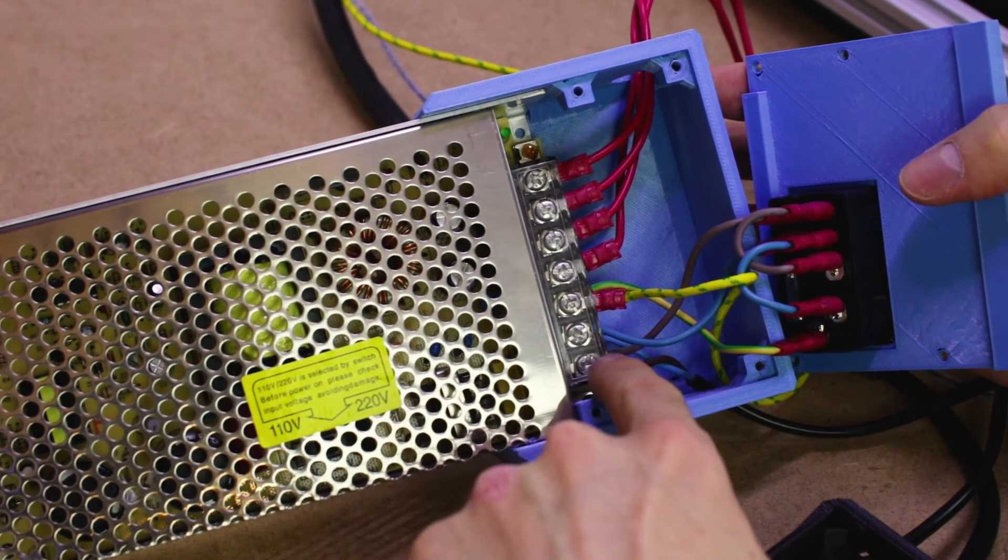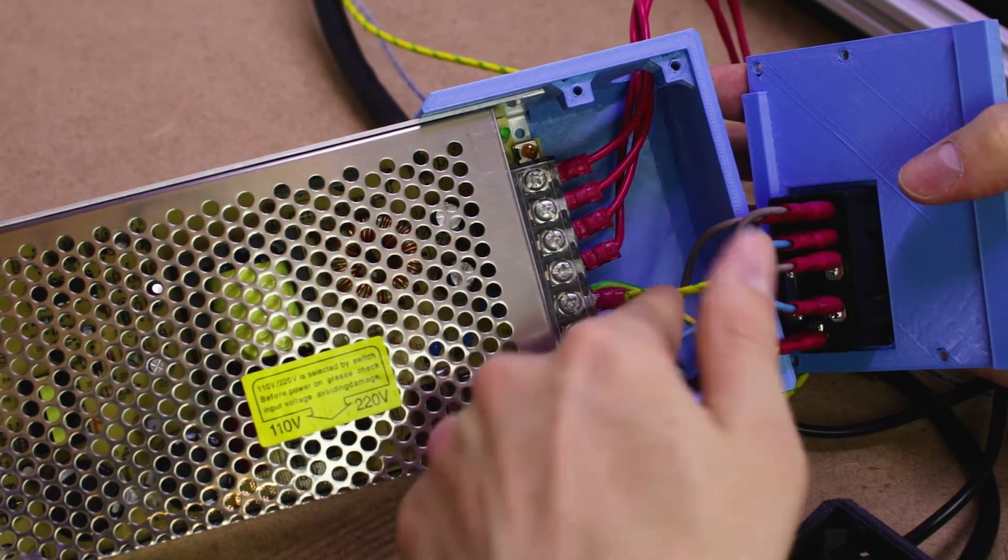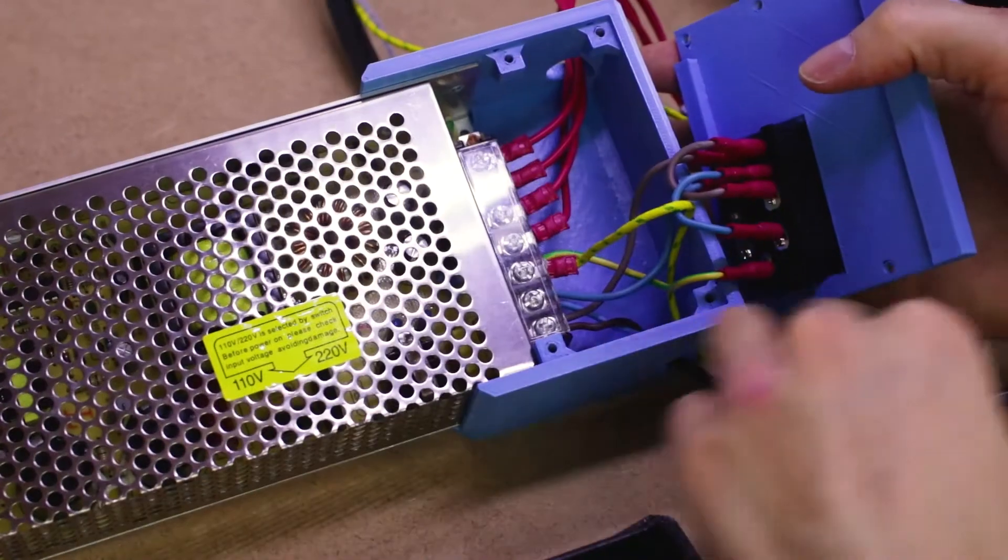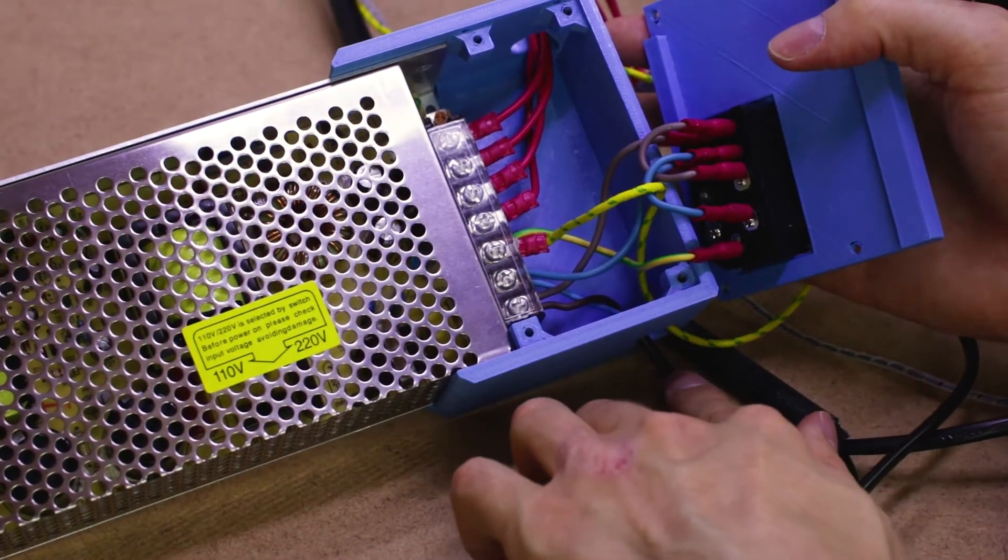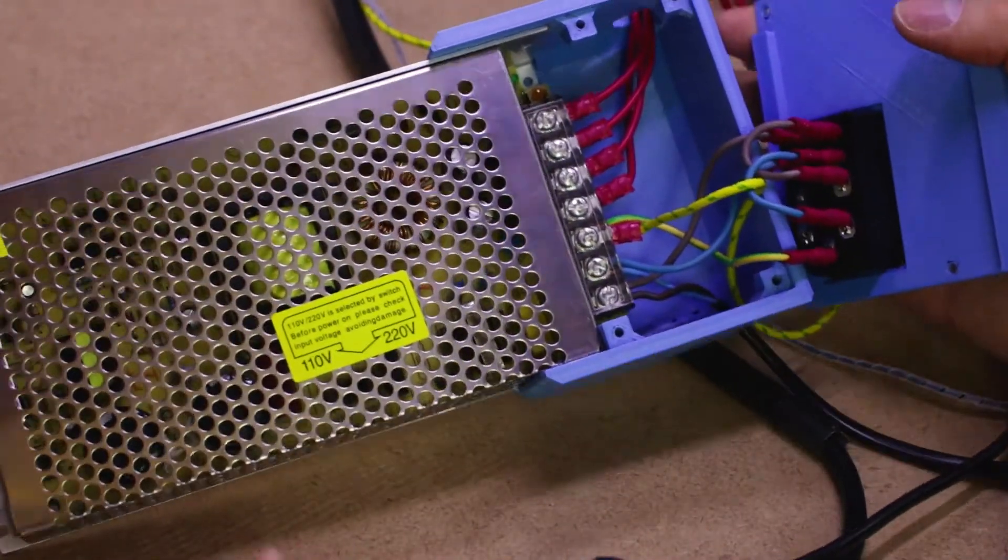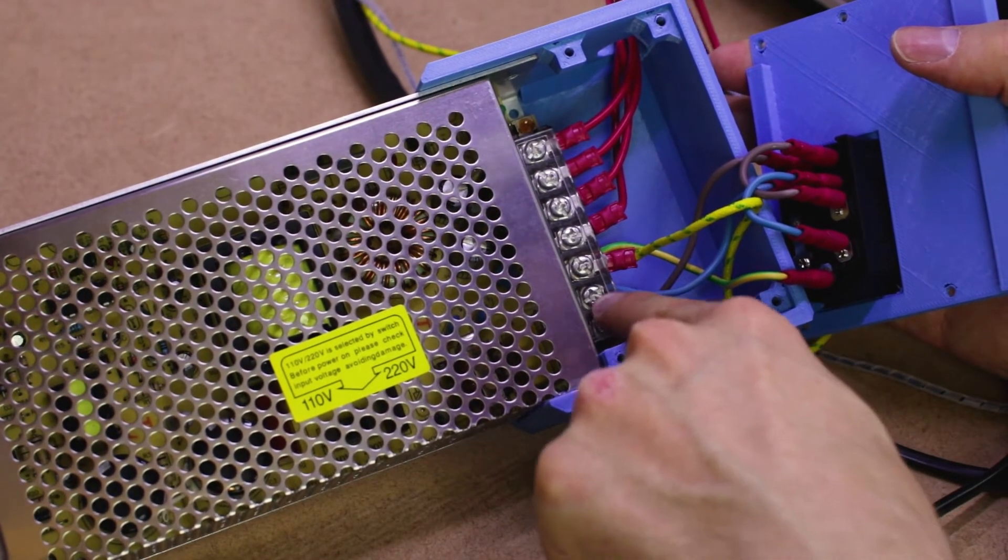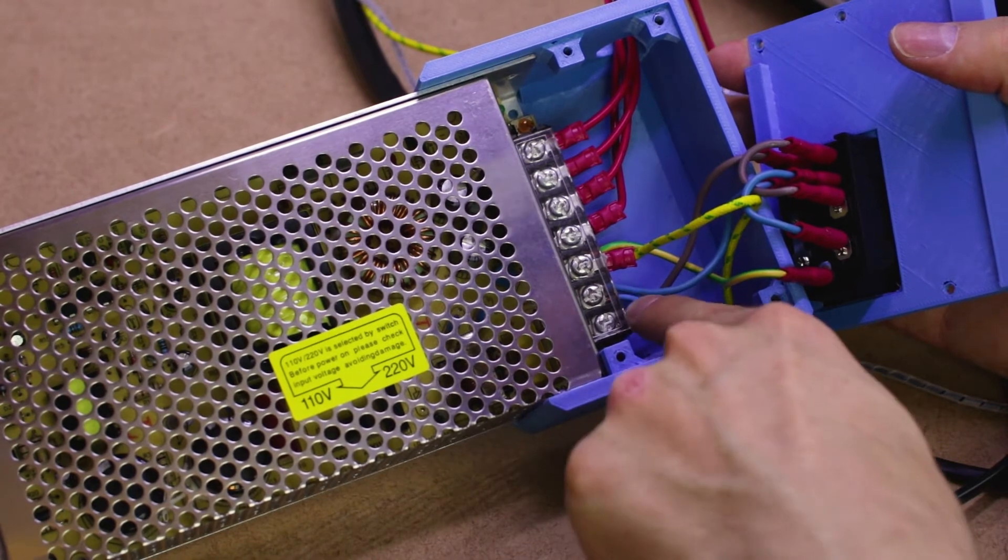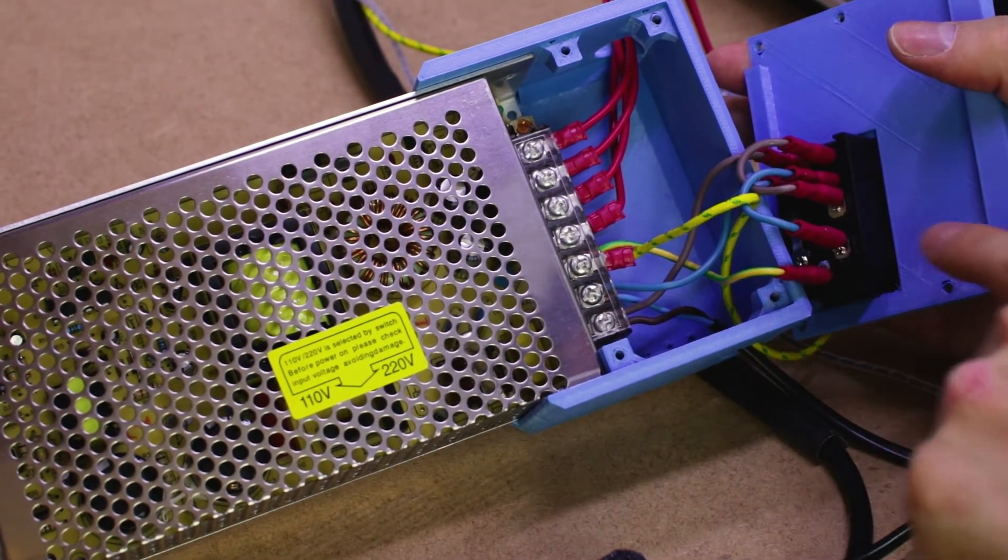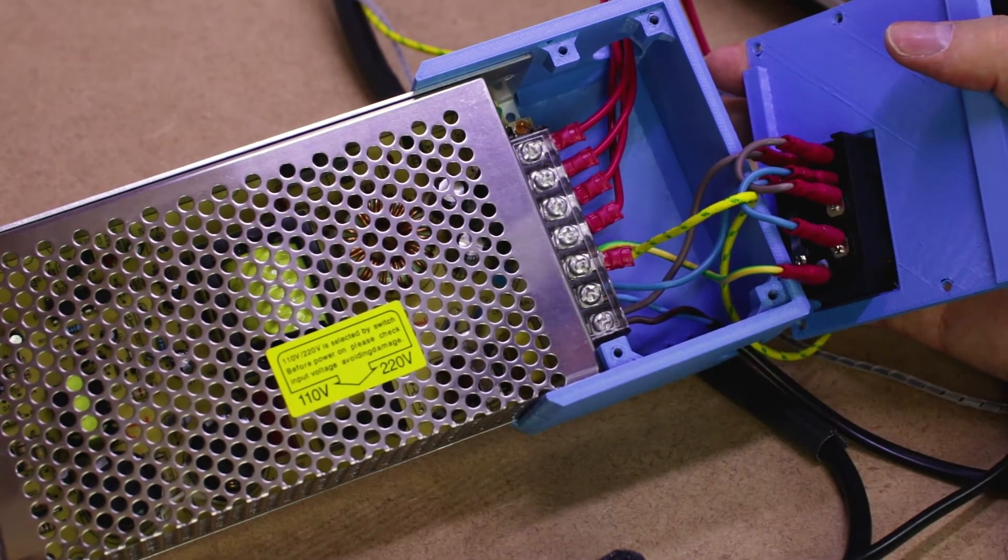Down here, you have your earth, neutral and live. And that's obviously yellow, green, blues and browns. So this wire that came from the SSR comes in through this hole in the bottom. That comes then directly into these brown and blue, live and neutral terminals. You can see there's two wires that go into that terminal because we want live to the power supply and also the same live to the SSR and thus the heated bed.